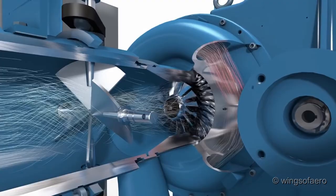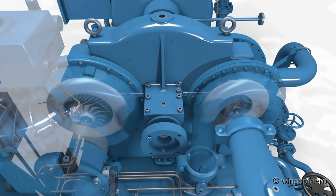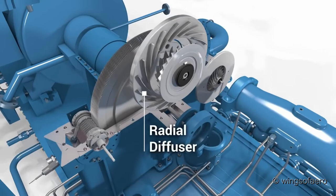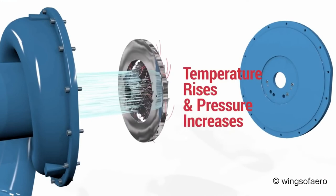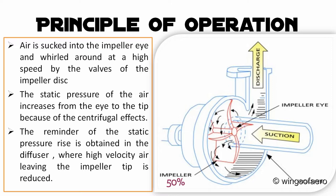It may be noted that air enters the impeller eye with a very high velocity. Friction in the diffusers will cause some losses in stagnation pressure. It is normal practice to design the compressor such that 50% of the pressure rise occurs in the impeller and the other 50% in the diffuser.